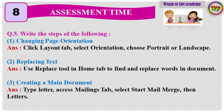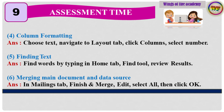Question 5: Write the steps of the following. 1. Changing page orientation. Answer: Click the Layout tab, select Orientation, choose Portrait or Landscape. 2. Replacing text. Answer: Use the Replace tool in the Home tab to find and replace words in the document. 3. Creating a main document. Answer: Type the letter, access the Mailings tab, select Start Mail Merge, then Letters. 4. Column Formatting. Answer: Select the text, navigate to the Layout tab, click Columns, select the number.